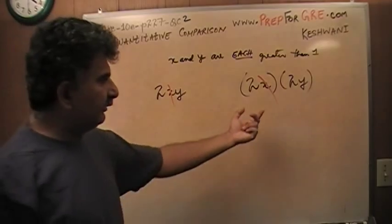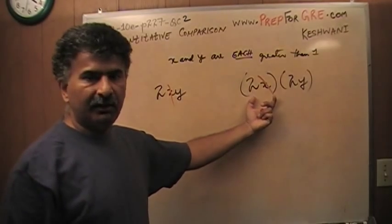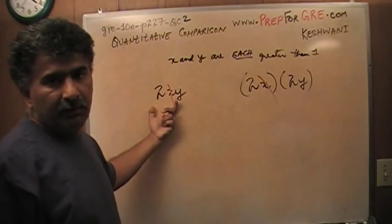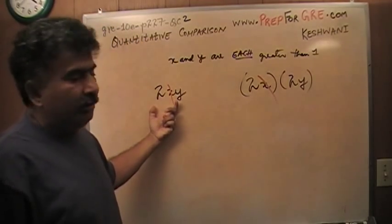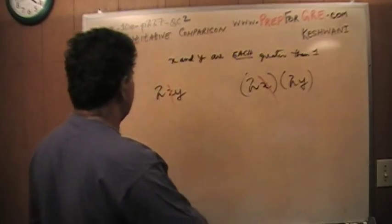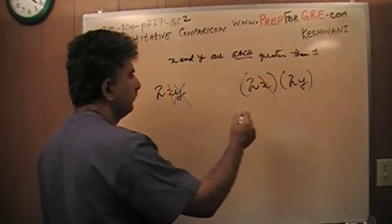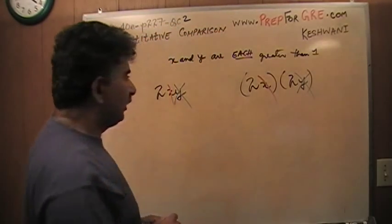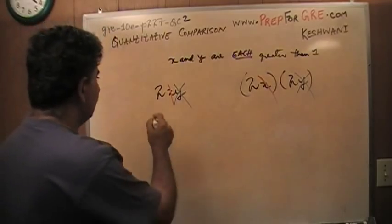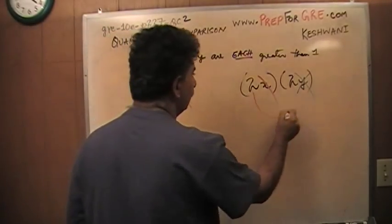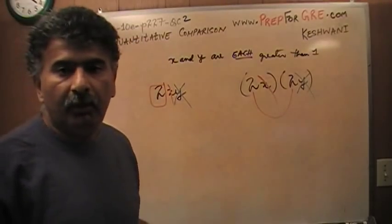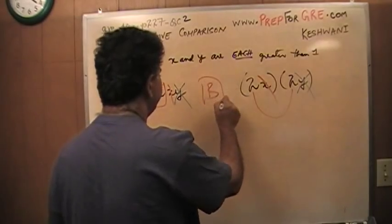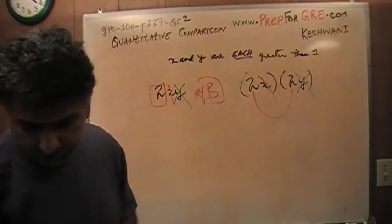That's exactly what's going on here. This x plays no role because it appears on both sides. Similarly, y appears on both sides, so y plays no role. Basically, what I'm asked to compare is: which one is greater, 2 or 2 times 2? Obviously, 2 times 2. The answer is B. That's all it was.